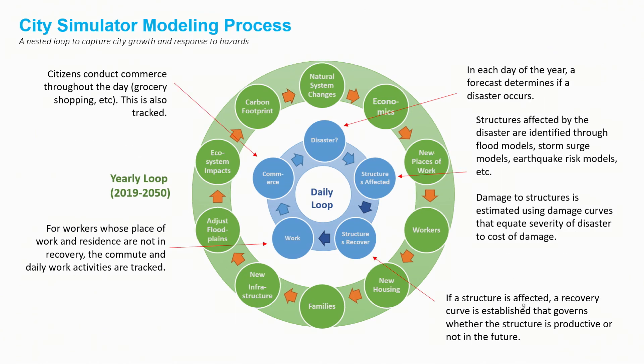The inner loop is the disaster loop, run daily. The first question asked is: did a storm or disaster occur on that day? We have a forecast based on global climate models of rainfall, so every day we ask whether there's a big storm. We then go to the next step, which says which structures are affected — using data from flood models, we can identify every single building that's impacted. Based on the severity, we can say a building is going to be not usable for anything from a day to months. We also simulate travel within this loop — commerce, people going to school, people going to work, and so on.